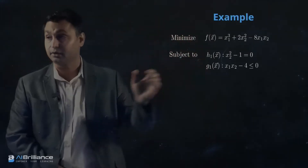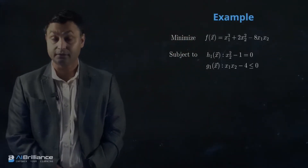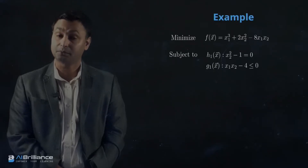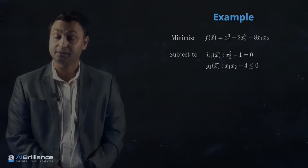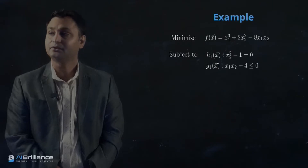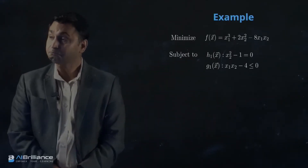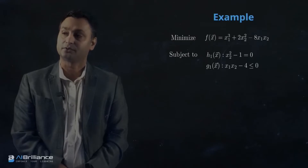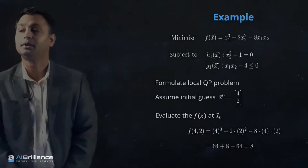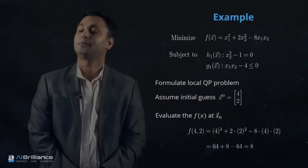So everything is nonlinear here. What we are going to do is start with this and convert this problem into a sequential quadratic problem — that's step one. We solve that sequential quadratic problem, and it acts as the main basis for solving the original problem. How do we go about formulating a local quadratic programming problem?